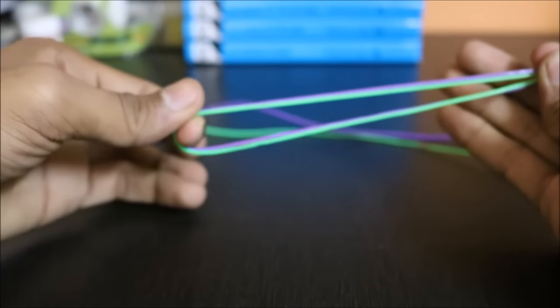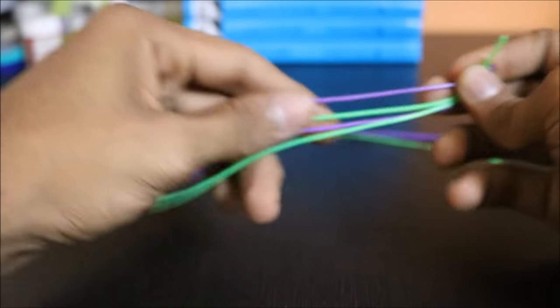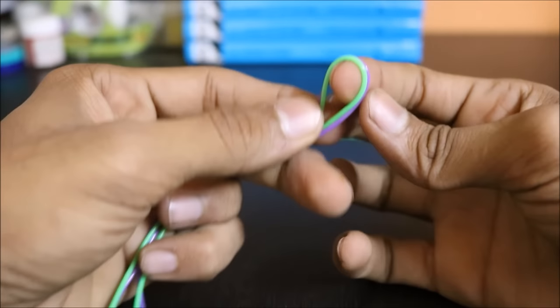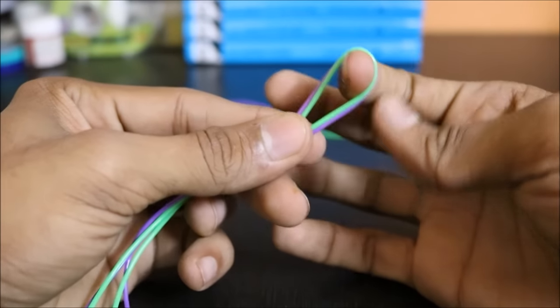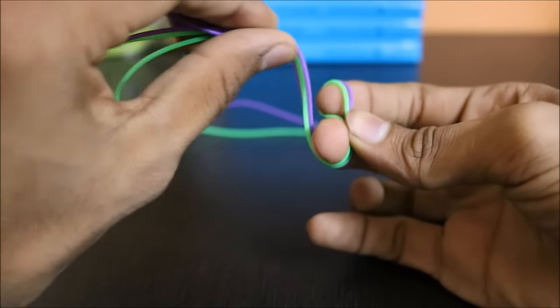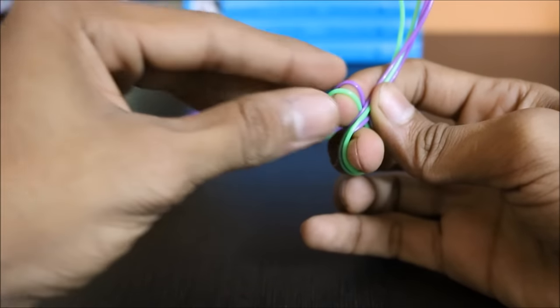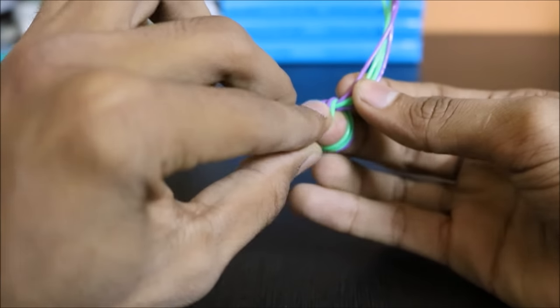You take the center of the strings, make a loop, and tie a knot. To make this loop, turn it around the finger and pass this through.